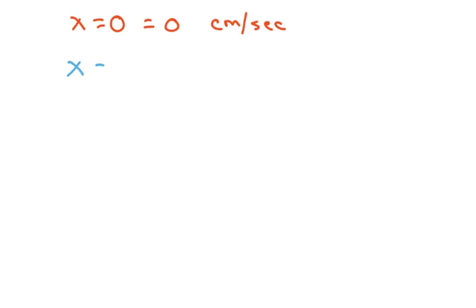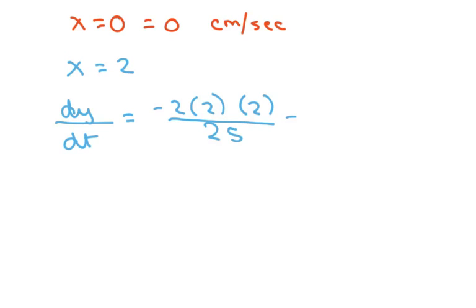And then when x is 2, I'm going to plug that in so you get derivative of y with respect to t. That's going to be negative 2 times my x, which is 2, times my derivative of x with respect to t divided by 25, and that's going to give you negative 8 over 25 centimeters per second.